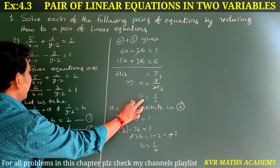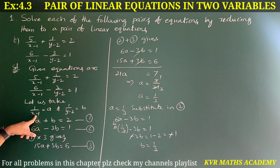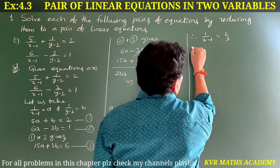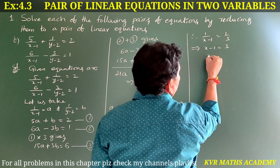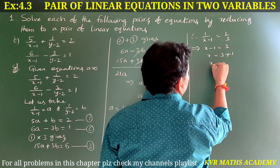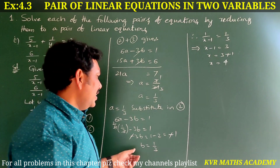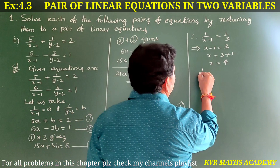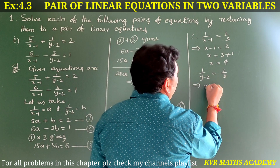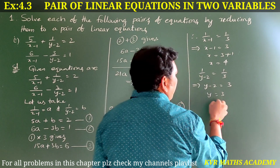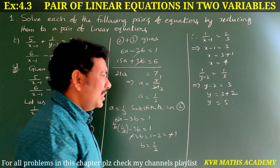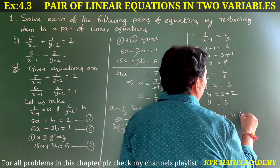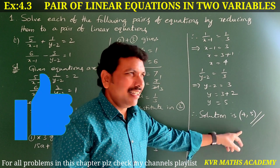Since a = 1/(x−1) = 1/3, reversing the fractions gives x−1 = 3, so x = 4. Since b = 1/(y−2) = 1/3, similarly y−2 = 3, so y = 5. Therefore the solution is x = 4, y = 5.